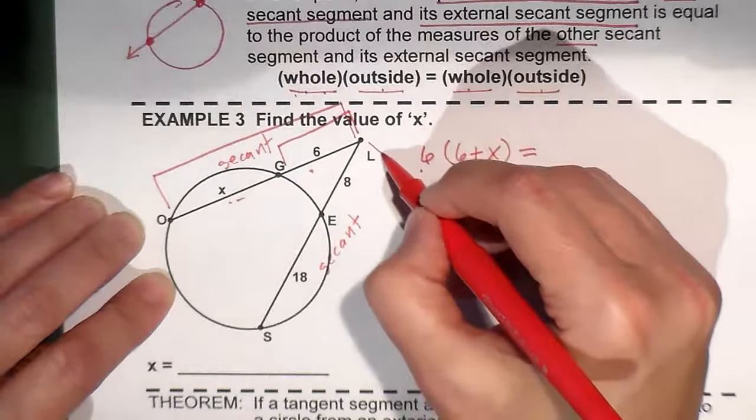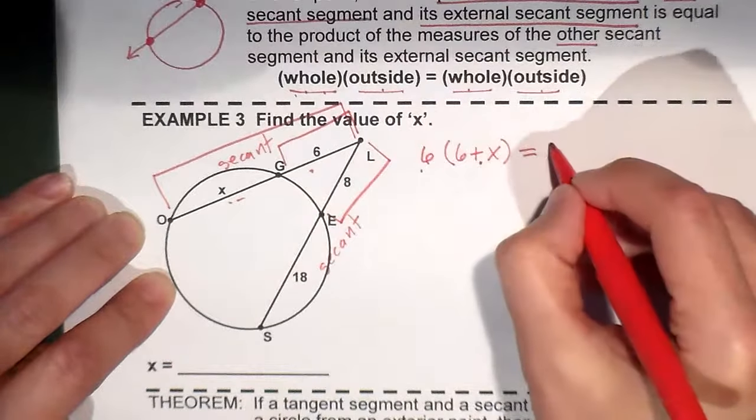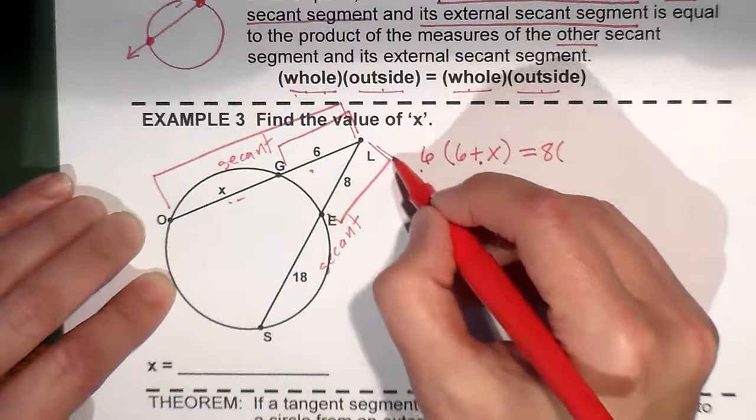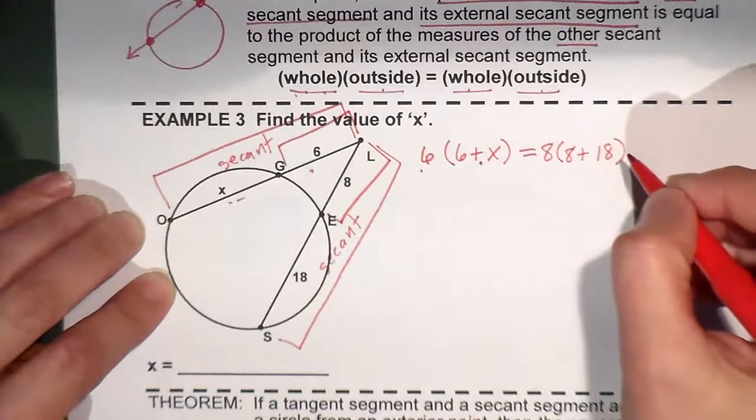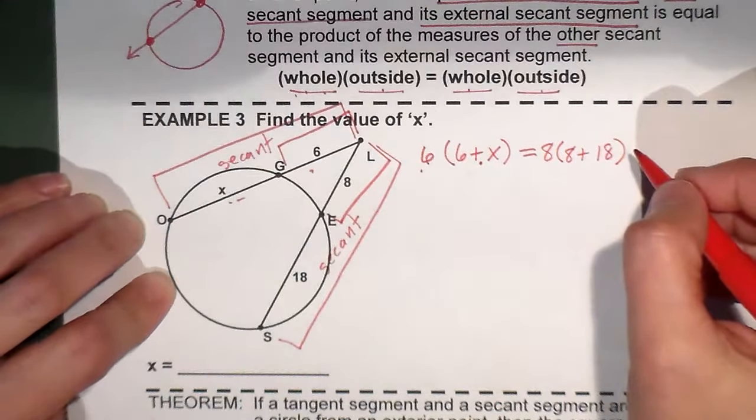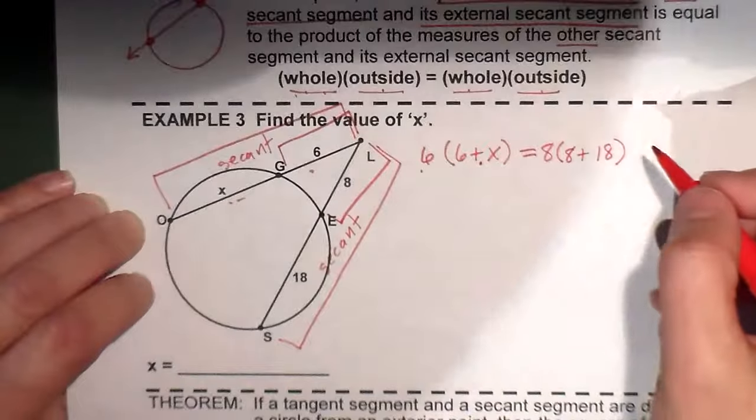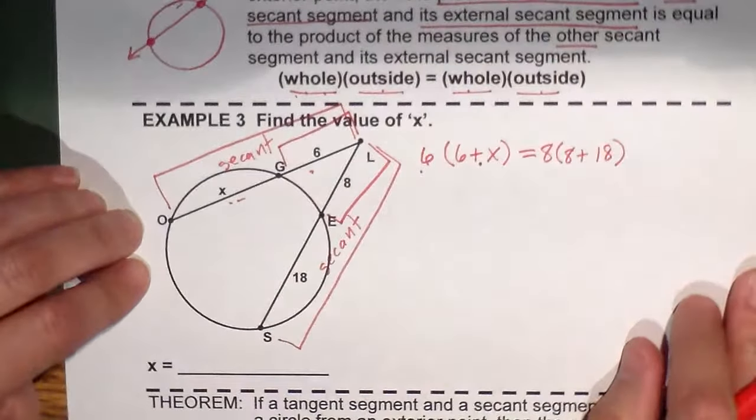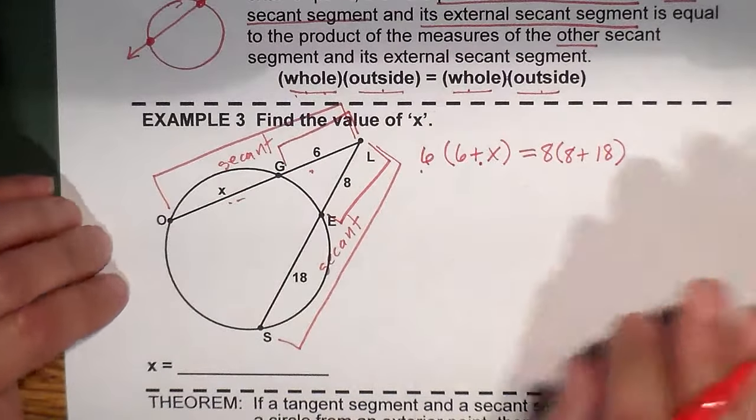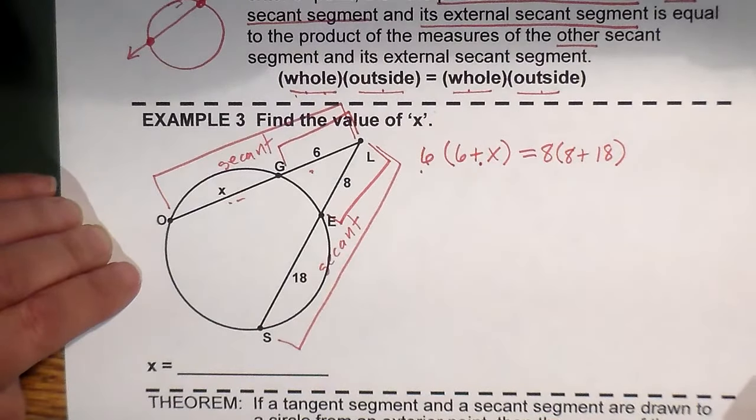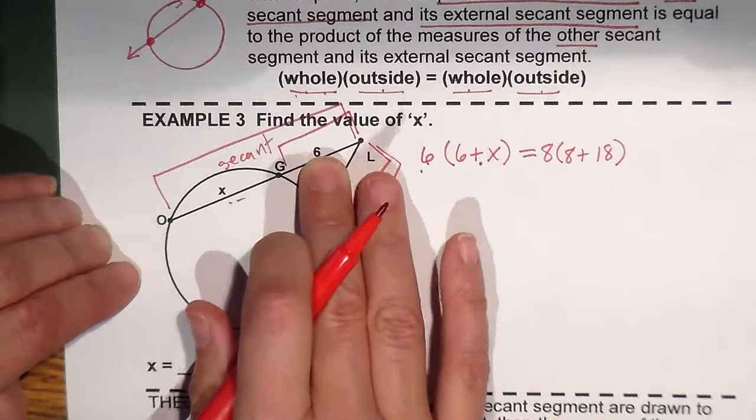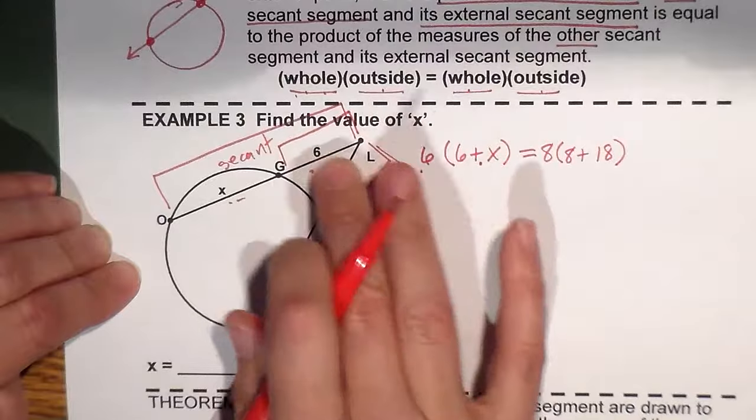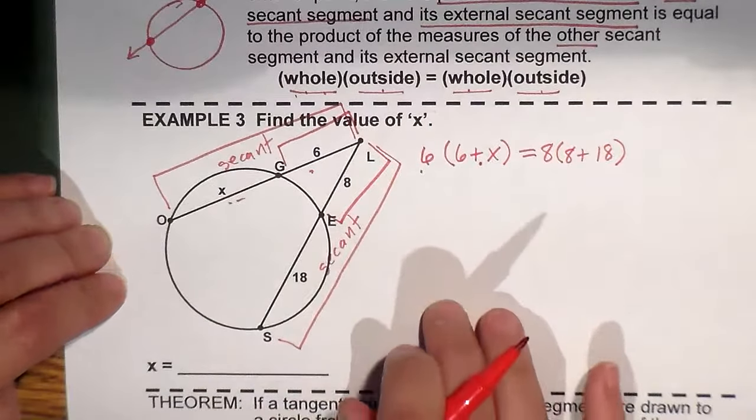That's going to equal, what's the external or the outside piece? Eight. What's the whole secant? Eight plus eighteen. Do you see how that works? Whole times outside equals whole times outside. Chords are piece times piece equals piece times piece. You have whole times outside, whole times outside when you have two secants.